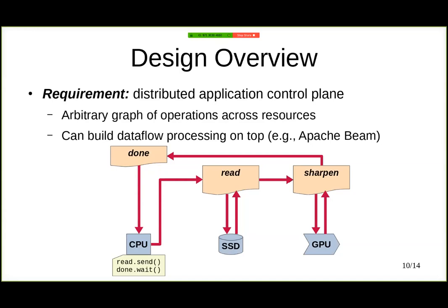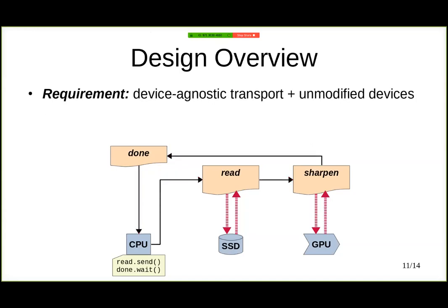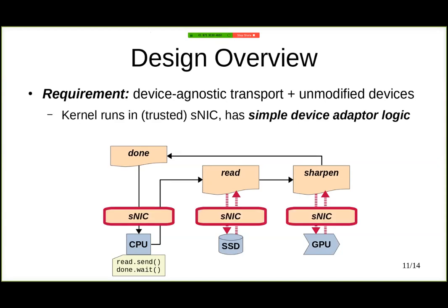Remember that we want Caladan to offer device-agnostic transport that is able to run with unmodified devices. Of course, both the SSD and the GPU do not know how to operate with Caladan messages across the network. So we deploy a trusted kernel on each of the SmartNICs. Each SmartNIC executes the Caladan kernel with a very simple device adapter logic that translates Caladan-specific messages into the specific requests offered by the device, then detects when the request is done and translates that back into triggering the next operation in the graph.